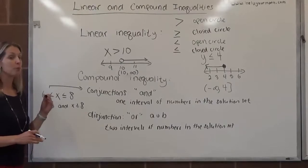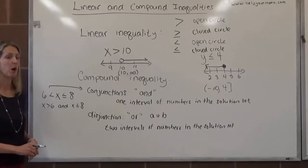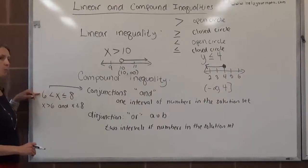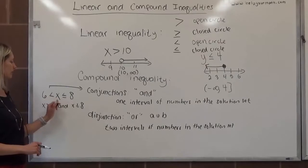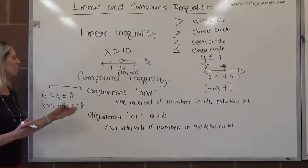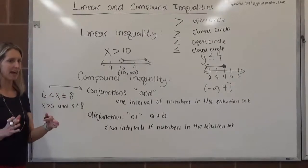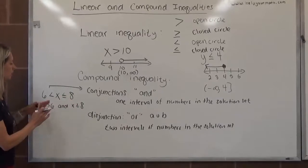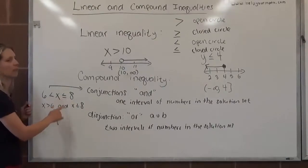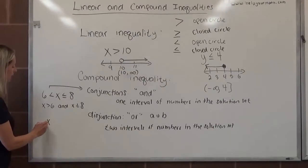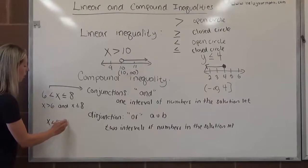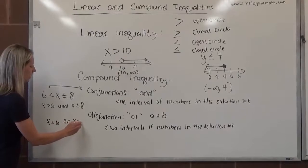For a disjunction, you must write two separate inequalities. The reason that this works is because no matter what, it will always be true. 6 will always be less than something which is less than or equal to 8. With disjunctions, we're not allowed to write anything here other than less than or less than or equal to.